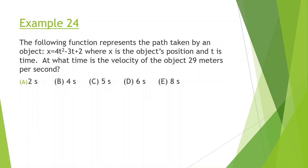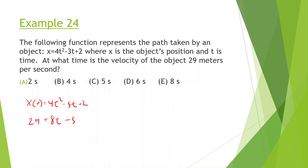Same function: x = 4t² - 3t + 2. At what time is the velocity 29 meters per second? The velocity as a function of time is 8t - 3. Setting that equal to 29: 8t - 3 = 29, so 8t = 32, and t = 4 seconds.